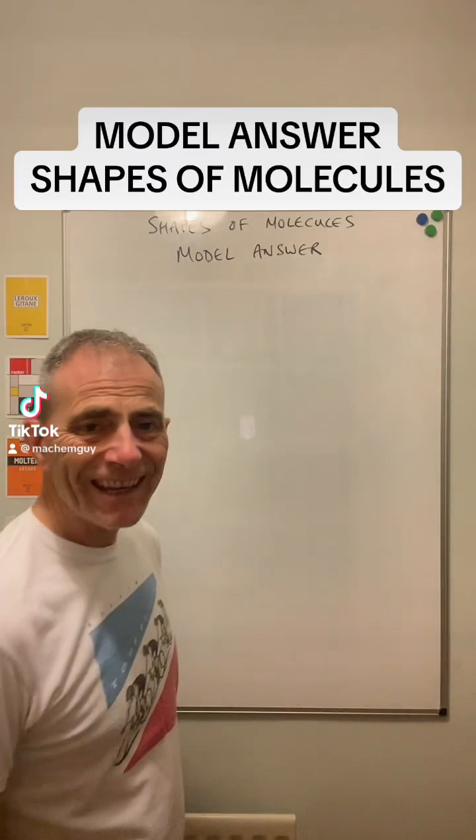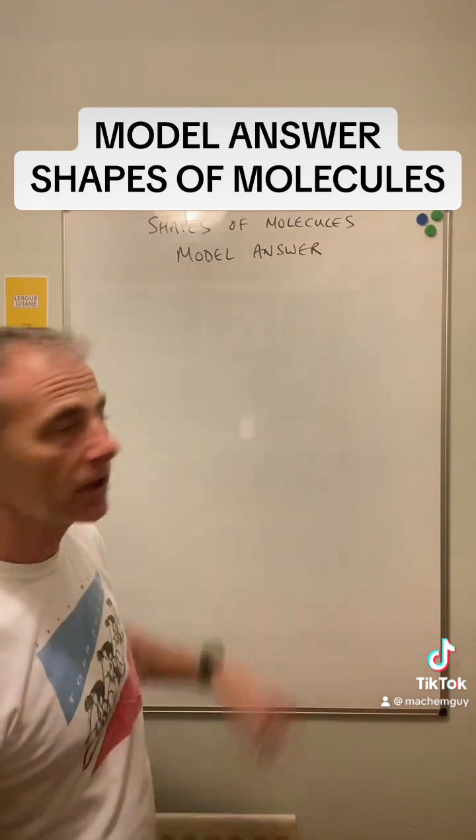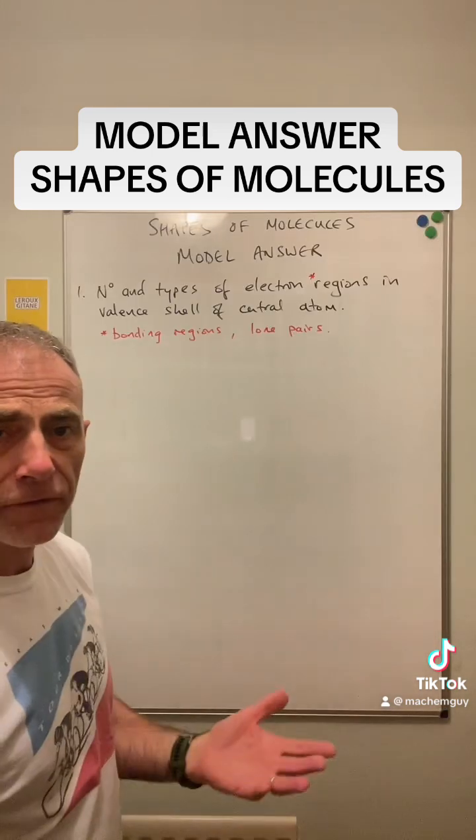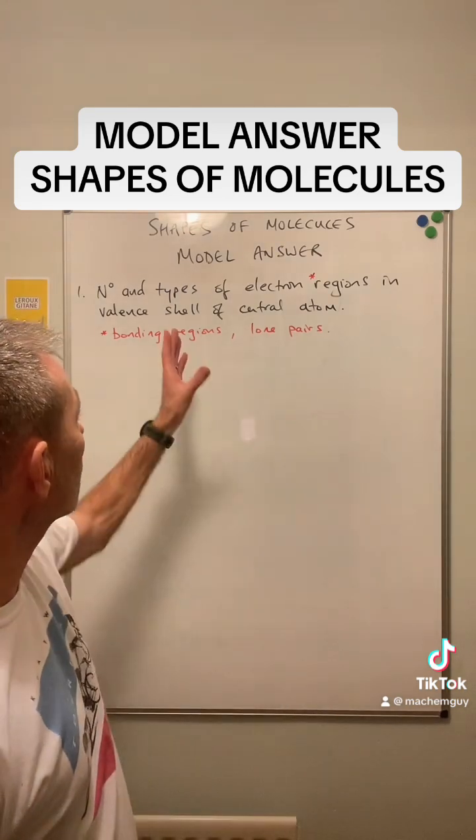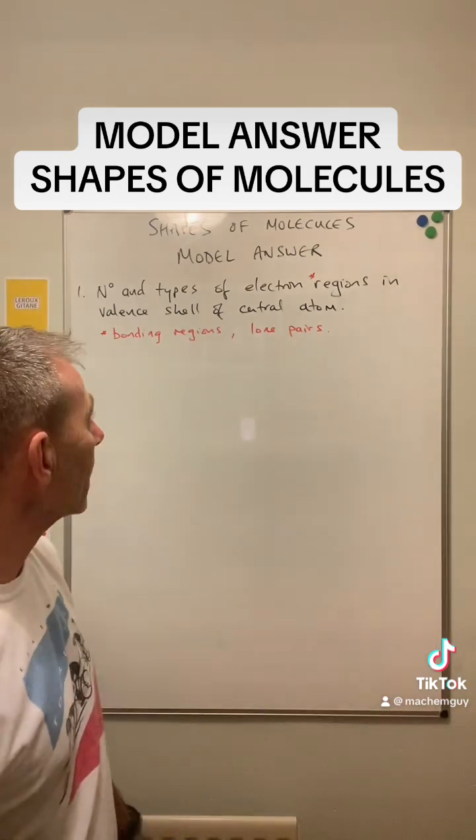I'm just going to run through the key points you must make if you're answering any question about shapes of molecules. So the first point you've got to make is the number and types of electron regions in the valence shell of the central atom.